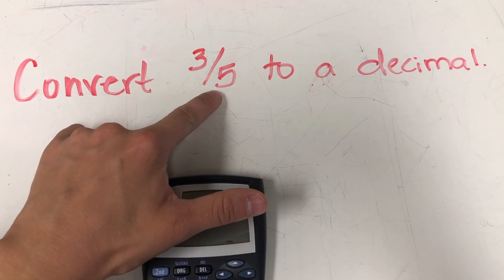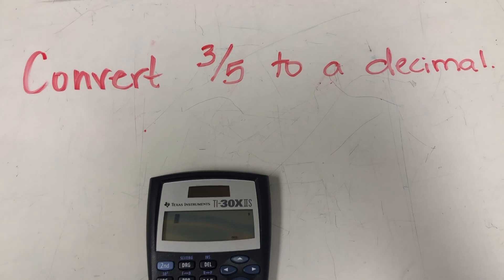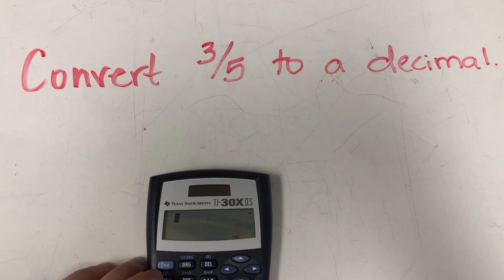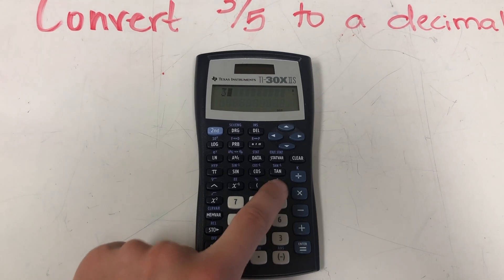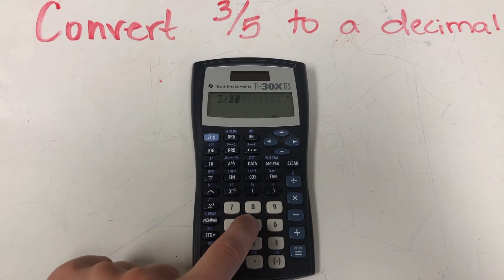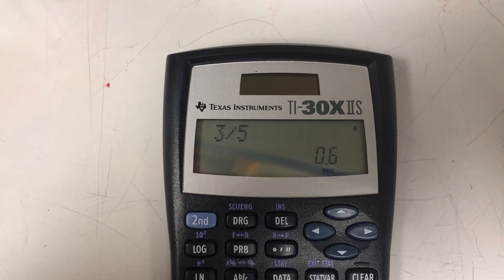So one strategy we could use would be to use long division and set up three divided by five. However, I'm not a big fan of long division. I don't want to spend the time doing that. So if I have my calculator, all I'm going to do is simply type in three divided by five, hit enter, and it's going to give me the decimal that is equivalent to three-fifths.